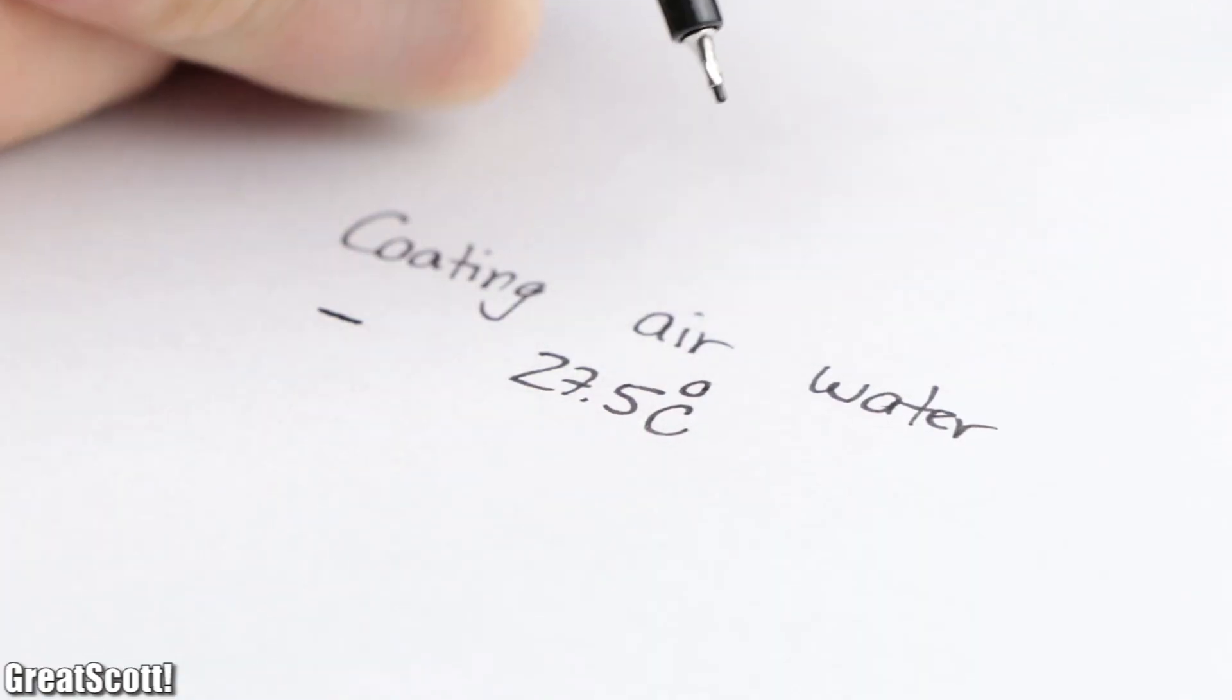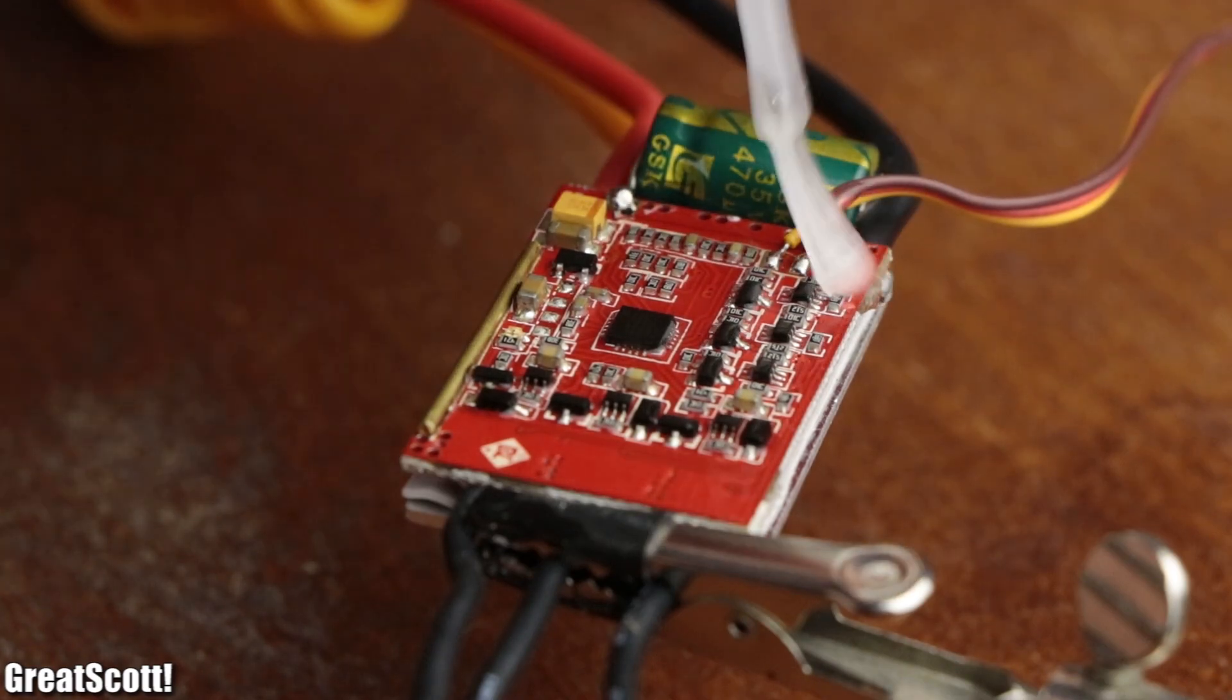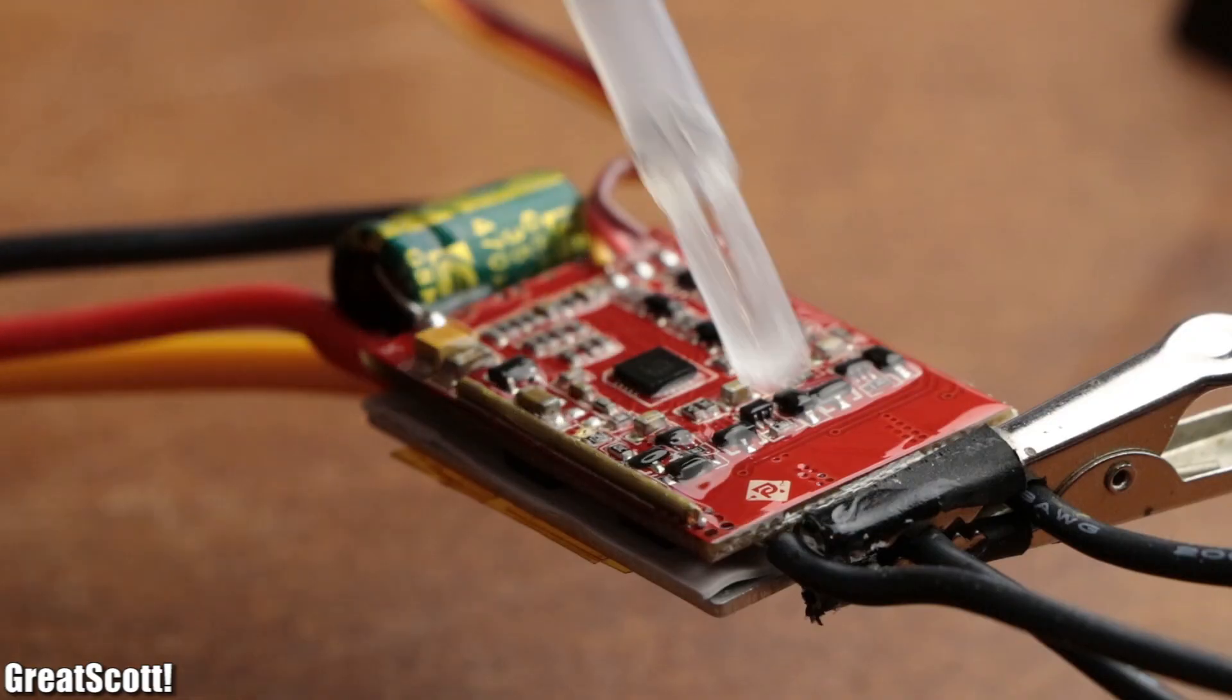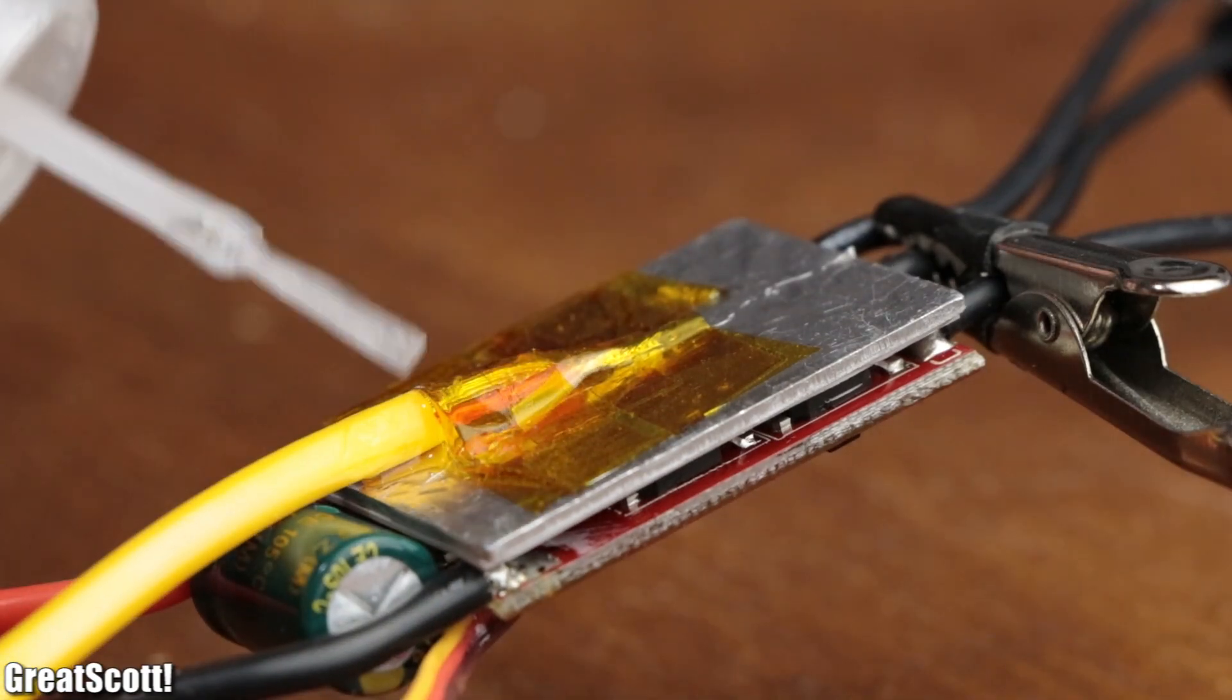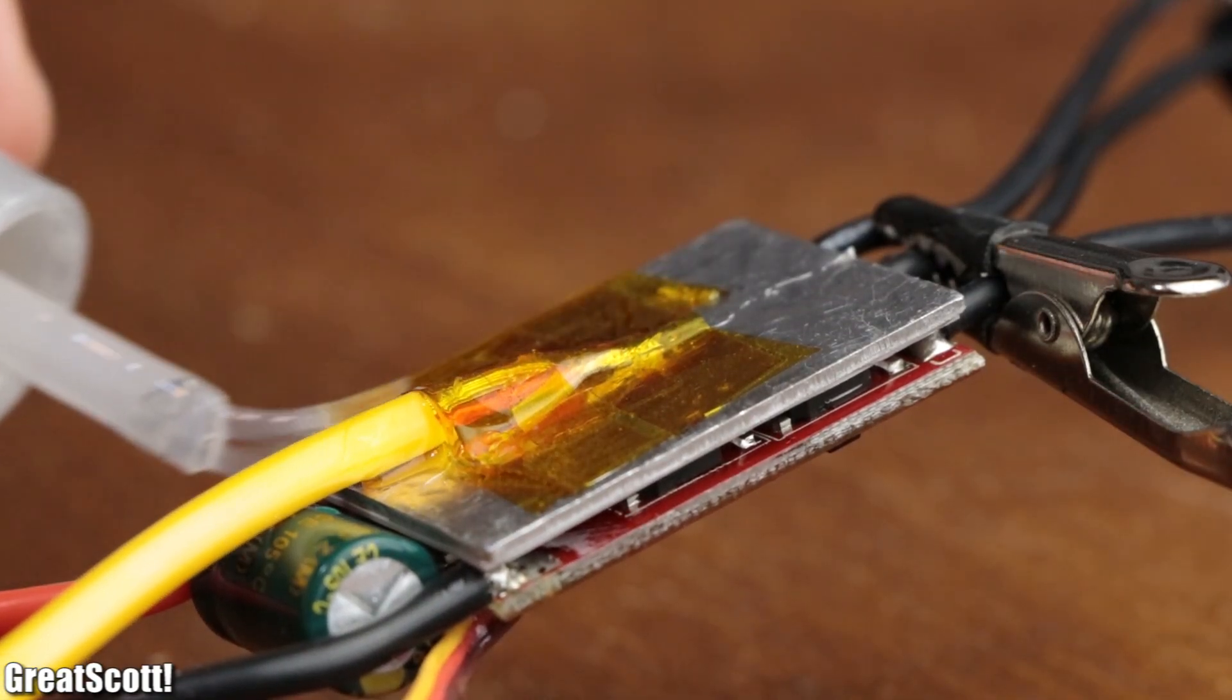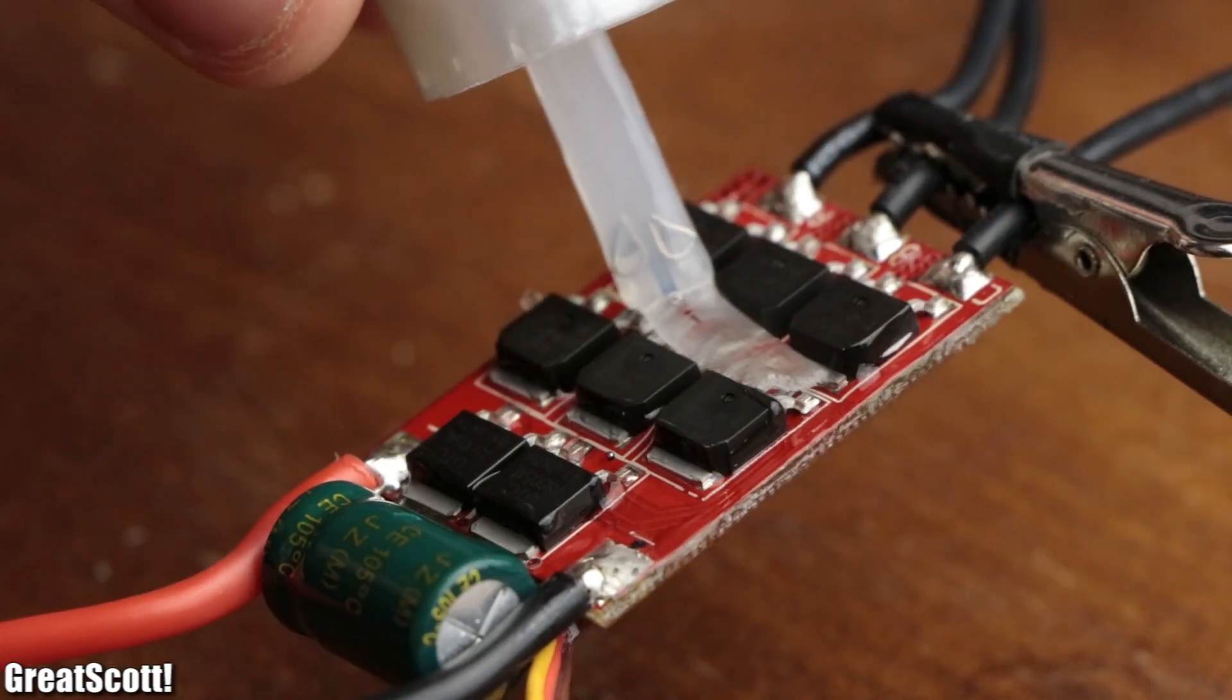For the first test I went with the nail polish, which does work on one side without a problem. But it should be fairly obvious that this method brings some problems when it comes to completely encapsulating the ESC plus its heat sink.